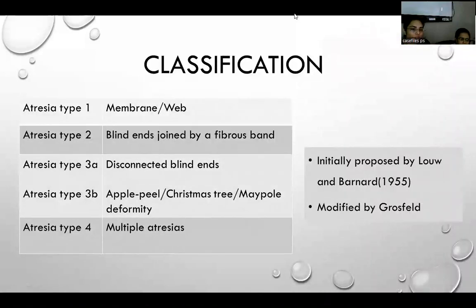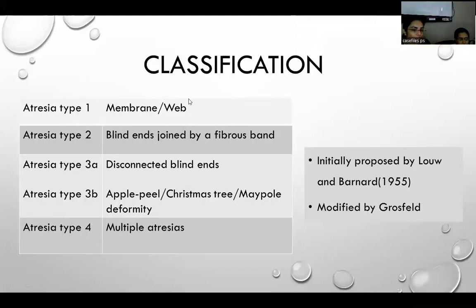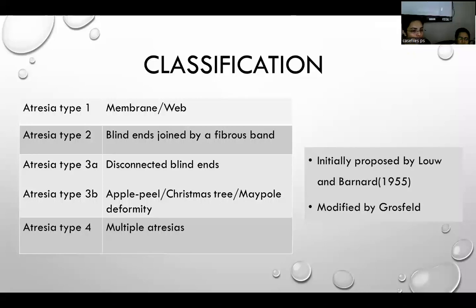The classification of jejunoileal atresia was initially proposed by Hallow and Bernard, who divided it into three types, and further modified by Grosfeld, who divided type 3 into 3A and 3B and added type 4. Type 1 has a membrane or web involving only mucosa and submucosa with intact muscular wall. Type 2 has complete atresia with a fibrous band connecting the ends. Type 3A has complete atresia with disconnected blind ends and a V-shaped mesenteric defect. Type 3B shows an apple peel, Christmas tree, or maypole deformity with helical formation of the distal bowel. Type 4 has multiple atresias.